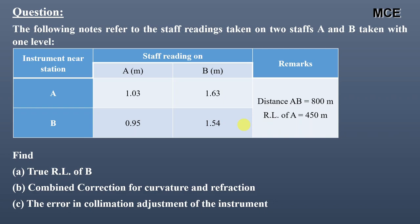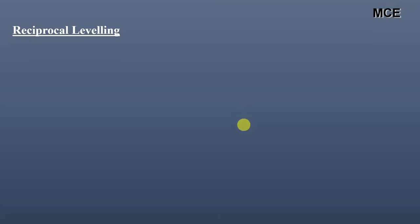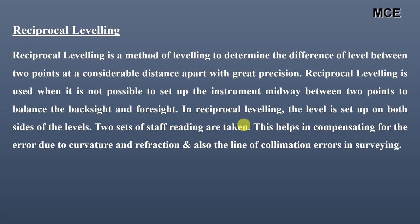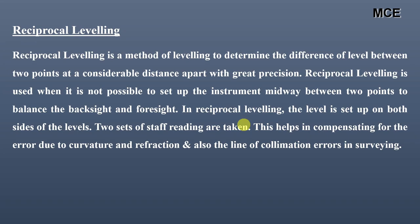Reciprocal leveling is the method of leveling used to determine the difference of level between two points at a considerable distance apart with great precision. It is used when it is not possible to set the instrument midway between two points so that we can balance the backsight and the foresight to reduce errors.